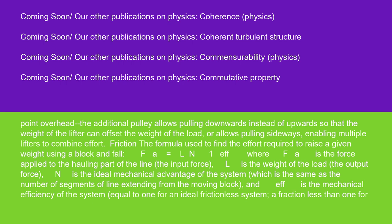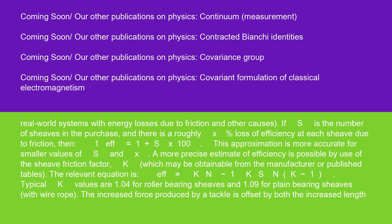Friction: The formula used to find the effort required to raise a given weight using a block and fall is FA = L / (N × EFF), where FA is the force applied to the hauling part of the line (the input force), L is the weight of the load (the output force), N is the ideal mechanical advantage of the system (which is the same as the number of segments of line extending from the moving block), and EFF is the mechanical efficiency of the system—equal to 1 for an ideal frictionless system, a fraction less than 1 for real world systems with energy losses due to friction and other causes.